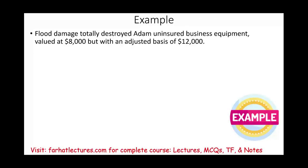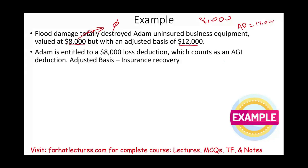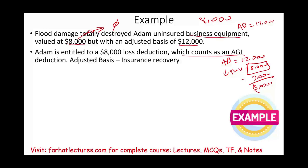For example, a flood totally damaged Adam's business equipment. It was valued at $8,000 fair market value before the flood, and was totally destroyed, so its value is now zero — a reduction in fair market value of $8,000. The adjusted basis is $12,000. Adam is entitled to an $8,000 loss because we take the lower of the adjusted basis ($12,000) or the reduction in fair market value ($8,000). If Adam received $3,000 in insurance proceeds, the loss would be $5,000. Since this is business equipment, the deduction is for AGI.